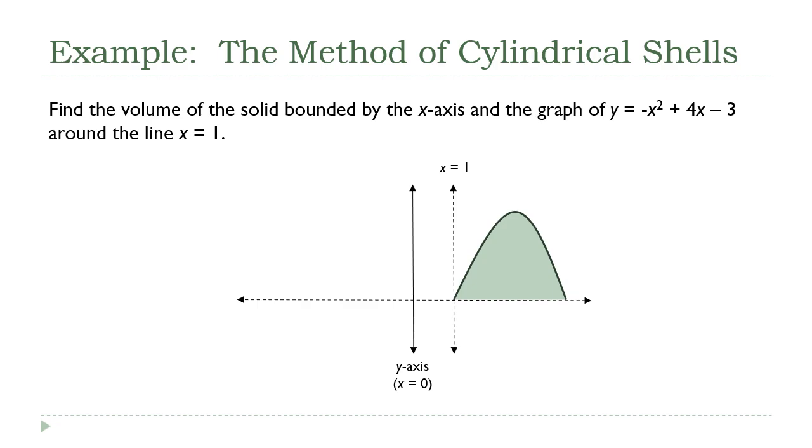So we're going to rotate around something other than the y-axis here. How are we going to do that? Well first, I've got a diagram here and I've labeled the two vertical lines just to make it clear which is which, right? One is the y-axis, that's x equals zero. We're going to rotate around x equals one.